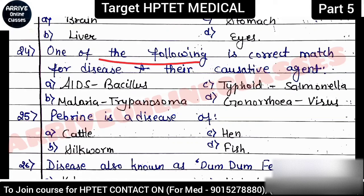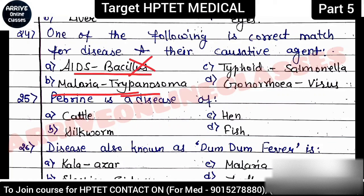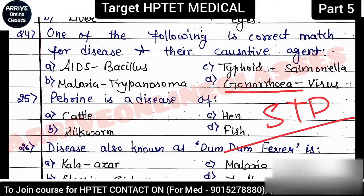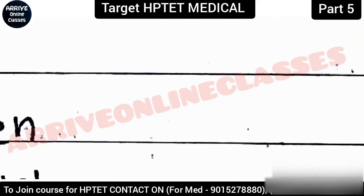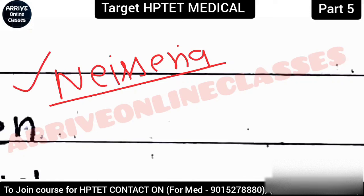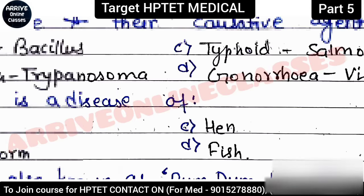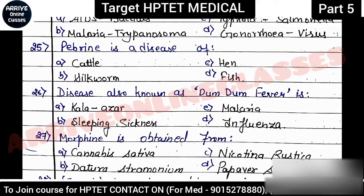Next question: 'Correct match for disease and causative agent?' AIDS with Bacillus — no. Malaria with Trypanosoma — no. Typhoid with Salmonella — yes, correct. Gonorrhea as a viral disease — no. Gonorrhea is an STD like AIDS. It is sexually transmitted and its causal organism should be noted — this question appeared separately in a paper, so note it down.